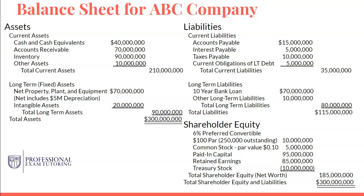Next on the balance sheet is the liabilities section. Similar to the assets section, liabilities are divided into current liabilities and long-term liabilities — the logic is very similar to current and long-term assets. Starting with accounts payable, which is basically the direct opposite of accounts receivable. Where accounts receivable was money owed to you, accounts payable represents money that you owe to someone else — for example, inventory purchased from a supplier that you haven't paid for yet, expected to be paid within a year.